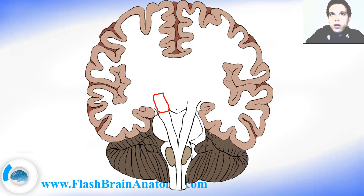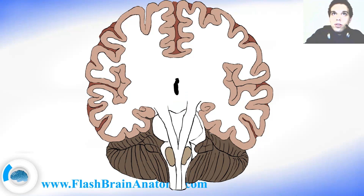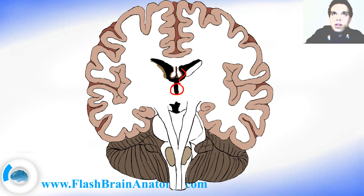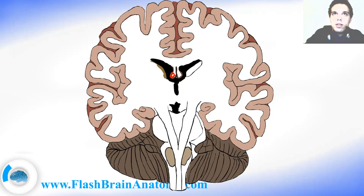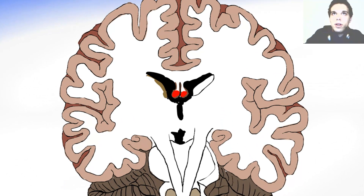These structures over here are the cerebral peduncles, and right between them is the interpeduncular fossa. Then we have the third ventricle of the brain, and the lateral ventricle of the brain with the fornix. These are the lateral ventricles, and these are the fornix. This was the interpeduncular fossa.